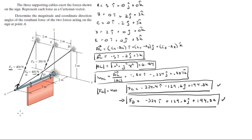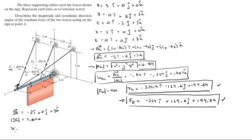The last force is FE. First we find vector DE, which comes out to be −2i + 0j + 3k, using the same method as before. The magnitude of DE is 3.606. The unit vector of DE is then the vector divided by the magnitude, giving −0.555i + 0j + 0.832k.